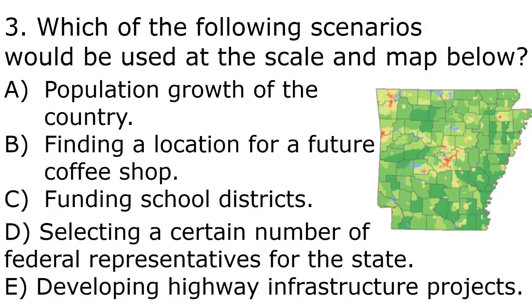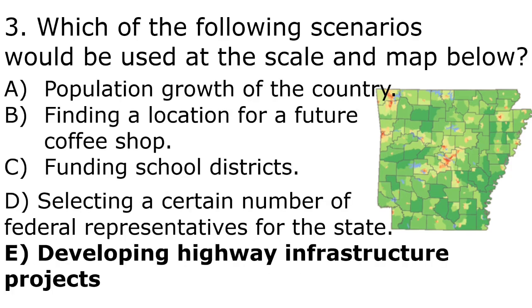Next question includes a stimulus — make sure you use it when answering. The correct answer is E, developing highway infrastructure projects. We're looking at a pretty large scale map. Small scale is like a world view; large scale is the more zoomed in you are. This map is actually showing us population growth in Arkansas. You may have a question on your AP exam asking what a map is showing without a title given.